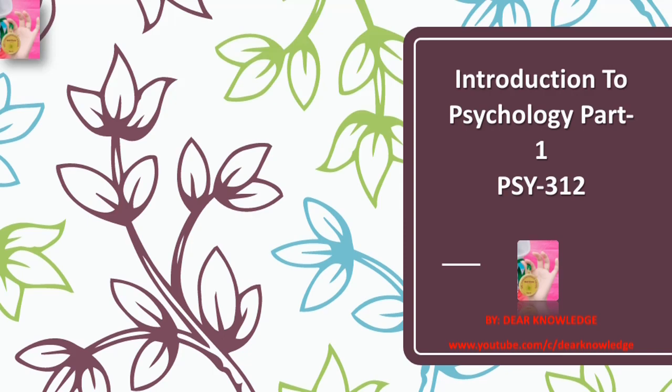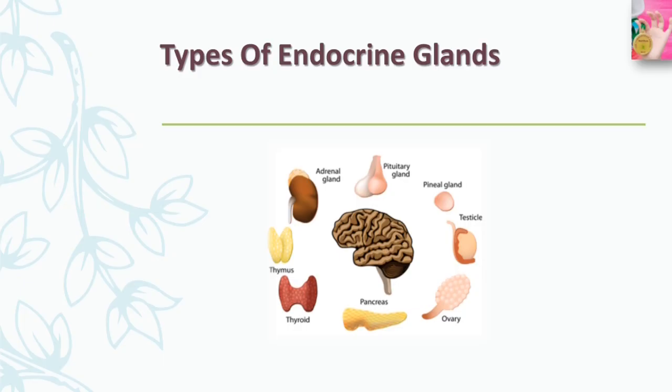Hello everyone, and Assalamu Alaikum. This is Introduction to Psychology Part 1, PS5312, by Dear Knowledge. In our previous video we started our lecture with the types of endocrine glands — we discussed the pituitary gland and thyroid gland in great detail. If you haven't watched that video, I have given a link in the description — go ahead, click on that link and watch that video.